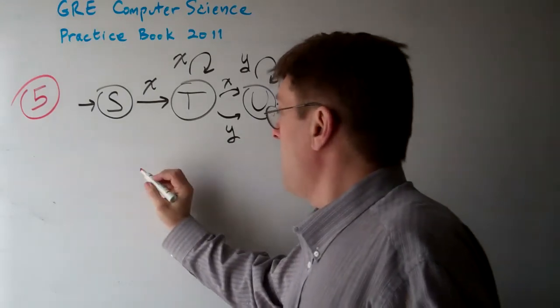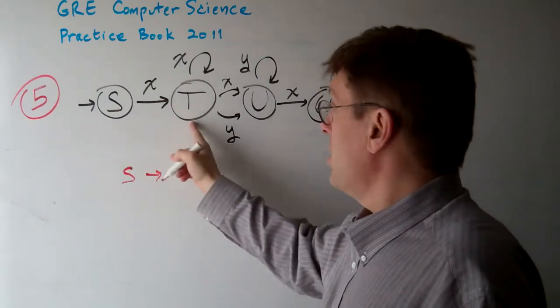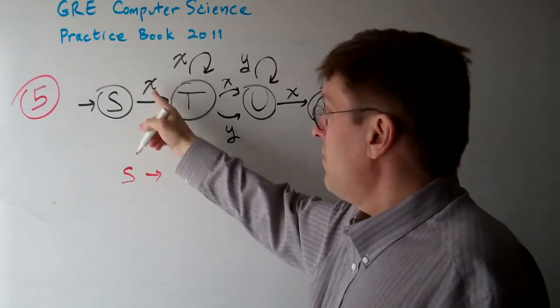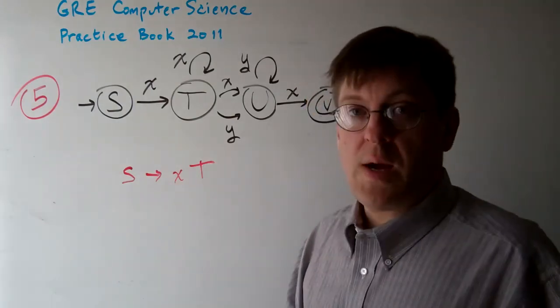We start with S. Where can we go from S? We can go to T. That's it. So we have to go through X. So it's X, T. That's the only option we have.